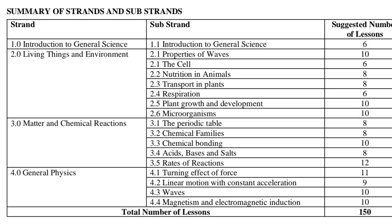The third strand is matter and chemical reactions. Substrands include: the periodic table, chemical families, chemical bonding, acids, bases and salts, and rates of reaction. The fourth strand is general physics, covering: turning effect of force, linear motion with constant acceleration, waves, and magnetism and electromagnetic induction. General science is covered in 150 lessons per academic year.